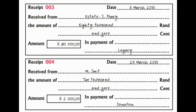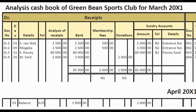Receipt number four: received from M Smith an amount of $2,000 for donations. On the debit side of the cash book, write M Smith, $2,000 in the analysis column, $2,000 in the bank column, and $2,000 in the donations column.